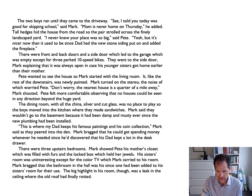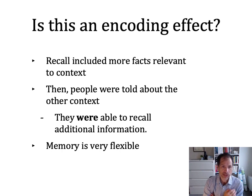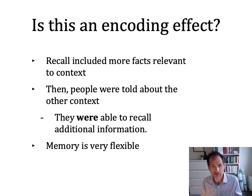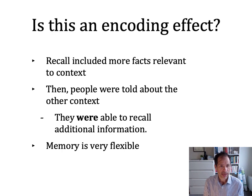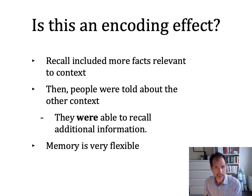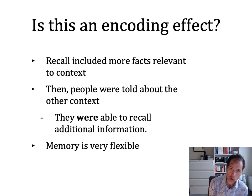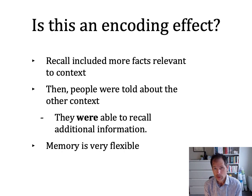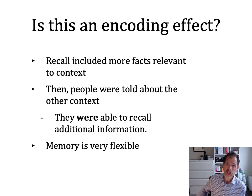But it's not just an encoding effect. It's more than just an encoding effect, and it suggests that memory is really flexible — that some of those facts didn't fit into a schema, but that doesn't mean that they weren't encoded. So again, the recall included more facts relevant to the context of the schema. But then people were told about the other context. So after you recalled the information consistent with home buyer, you were told: now think about that paragraph from the perspective of a burglar. And what they found is that subjects could then remember additional information that was consistent with the alternative schema.